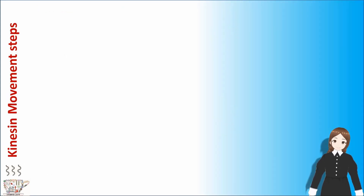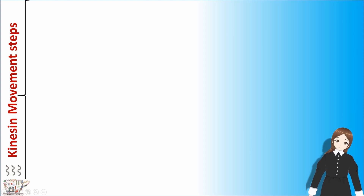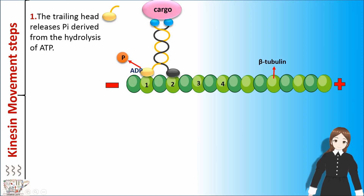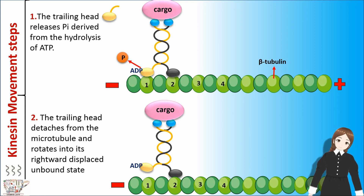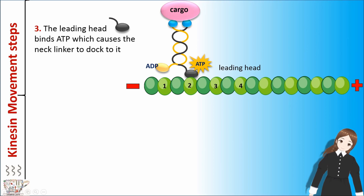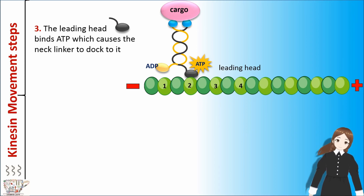Kinesin movement steps. Step 1: The trailing head releases phosphate derived from the hydrolysis of ATP. Step 2: The trailing head detaches from the microtubule and rotates into its forward-displaced unbound state. Step 3: The leading head binds ATP, which causes the neck linker to dock to it.